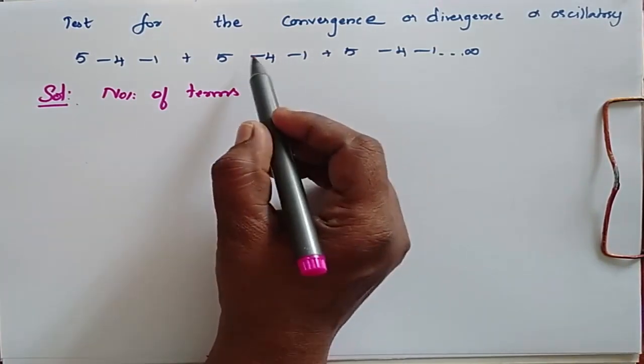Test for the convergence, divergence, or oscillatory behavior of the series given. When you look at the series, these three numbers repeat again and again. When you add these three numbers it is zero. When my series ends with minus one, the number of terms in this series is 3m.